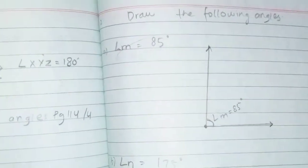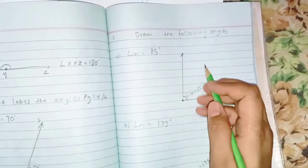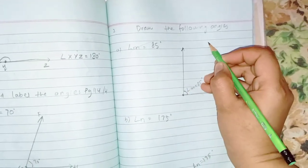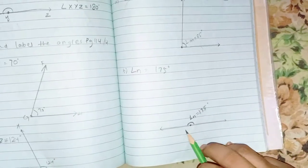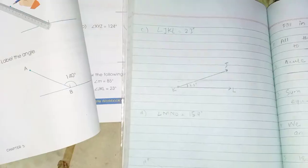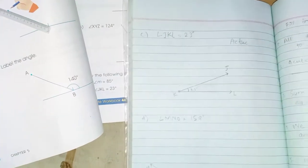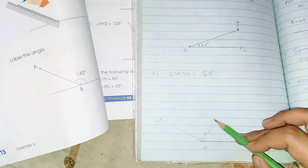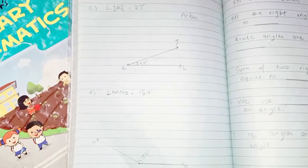Some questions ask you to draw angles: 85, 23, 175, and 159 degrees. I have drawn these angles in the copy. 85 is less than 90 so it is an acute angle drawn in a closed shape. 175 is an obtuse angle. 23 is also acute. Acute angles are always in a closed shape, obtuse angles are in an open shape, and right angles are straight.